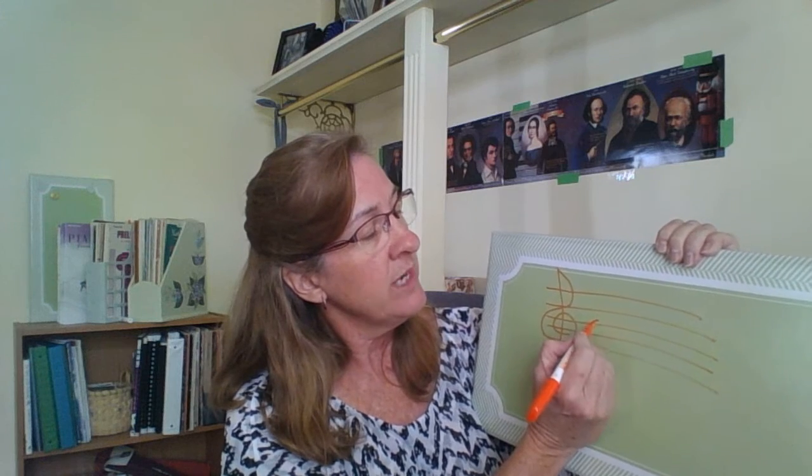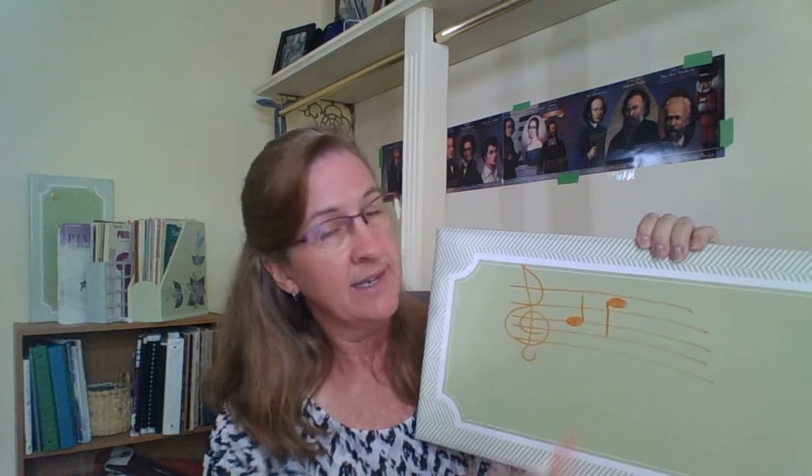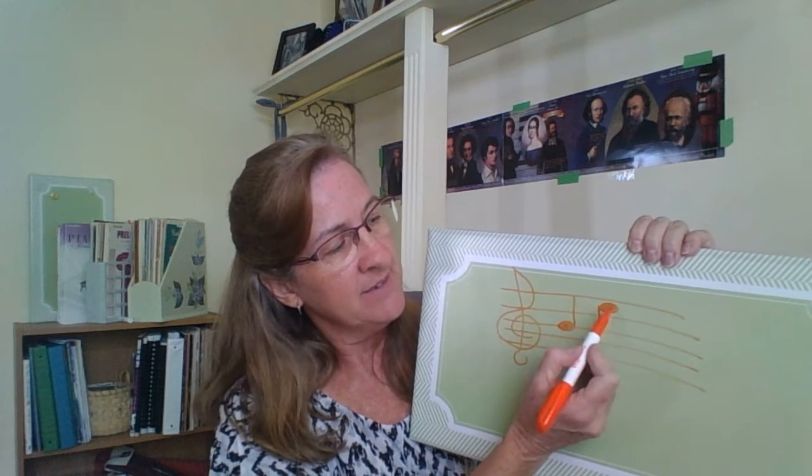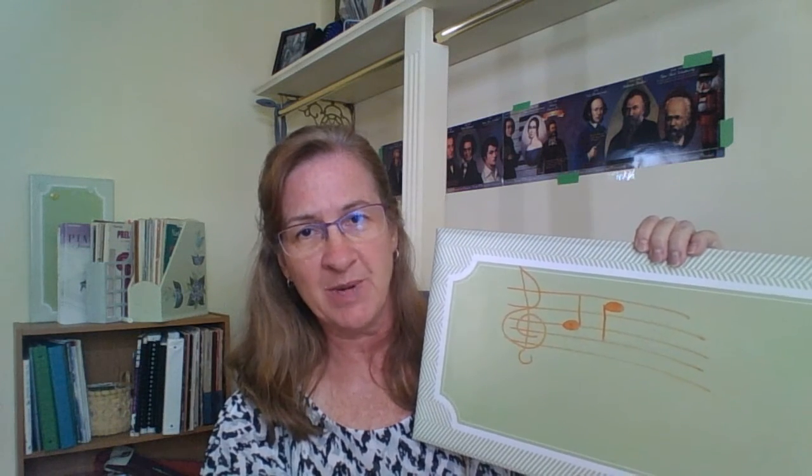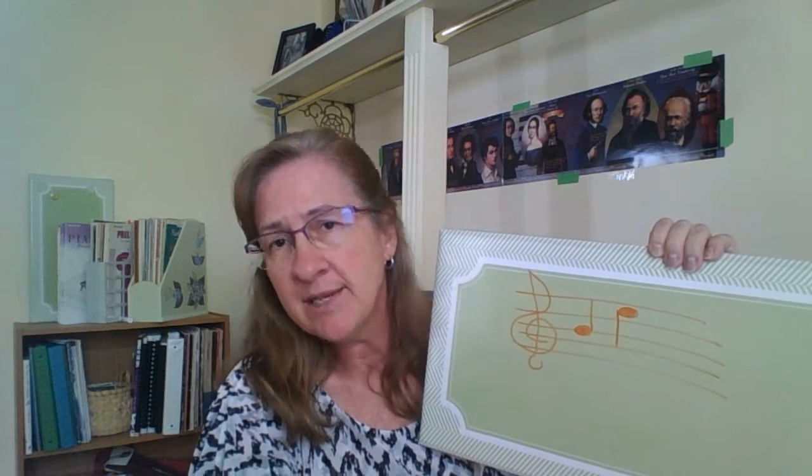Today we're going to talk about the stems that go on the notes. When you draw a note on a line, sometimes you draw the stem going up and sometimes you draw the stem going down. Notice how the stem going up is on the right side of the note head, and the stem going down is on the left side of the note head.